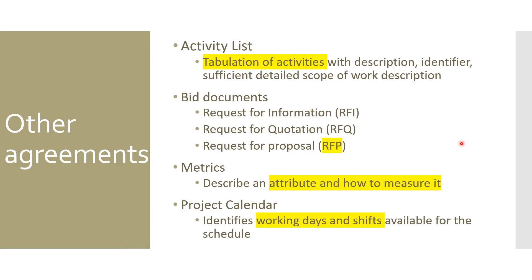Bid documents are another artifact type. They can be a Request for Information (RFI), Request for Proposal (RFP), or Request for Quotation (RFQ). RFP is very common — for example, a government seeking proposals from different IT vendors, or a buyer requesting proposals from multiple suppliers, evaluating them through bidder conferences, and choosing one or two vendors based on terms and conditions.